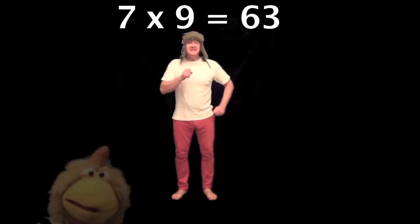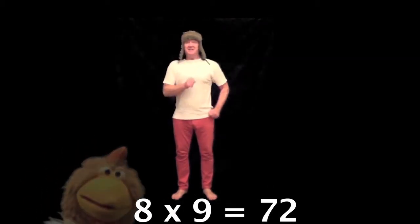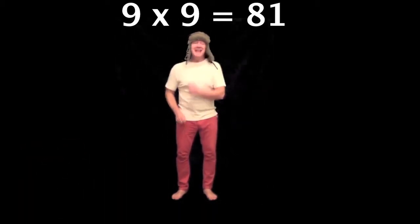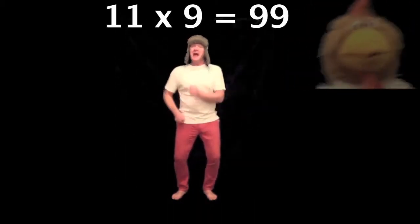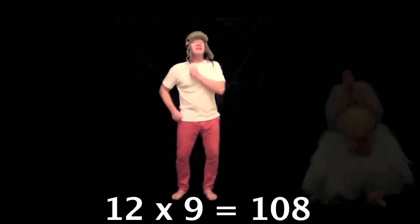7 times 9 is 63, 8 times 9 is 72, 9 times 9 is 81, 10 times 9 is 90, 11 times 9 is 99, 12 times 9 is 108.